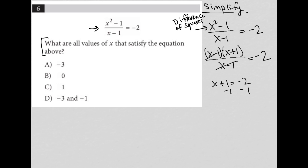I subtract 1 from both sides and I'm left with x equals negative 3. So the question says, what are all values of x that satisfy the equation above? So I got x equals negative 3. I see negative 3 here, so I like that as an answer.